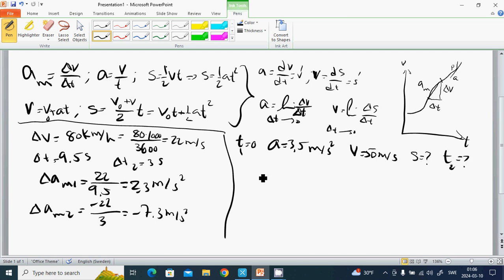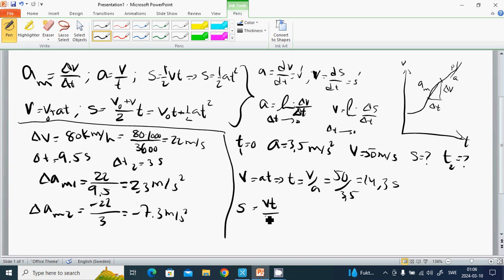We know that V equals aT, then T equals V divided by a, which is 15 divided by 3.5, which is 14.3 seconds. And S is half aT², which is 3.5 times 14.3² divided by 2, which is 358 meters. It has around 358 meters of runway.